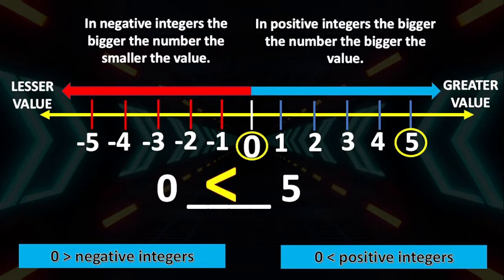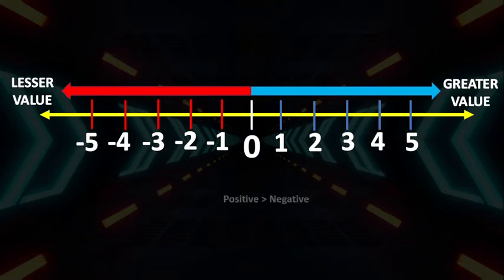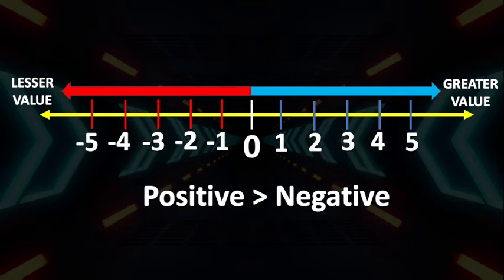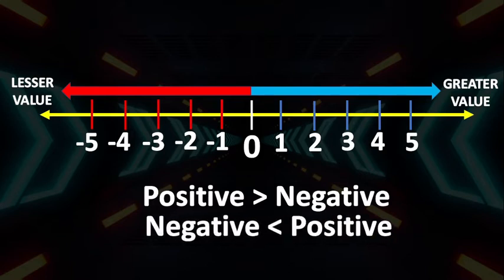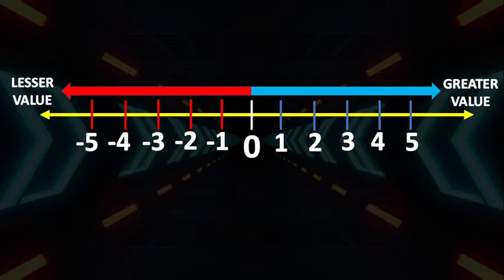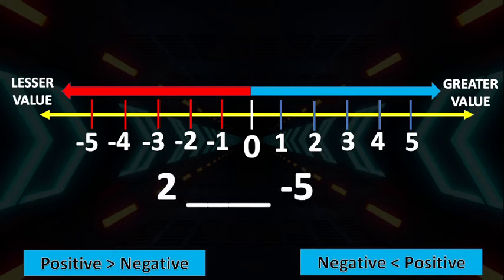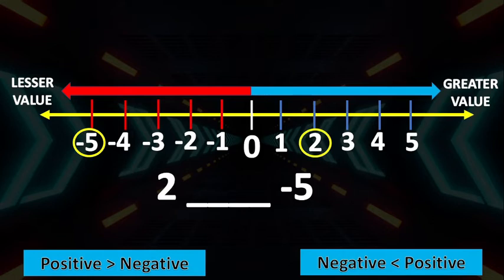We also need to understand that all positive integers are greater than all negative integers, or all positive integers and 0 are greater than all negative integers. It means that negative integers are less than 0 and positive integers. Let's try this one: compare positive 2 and negative 5. It seems that negative 5 is greater than positive 2, but since all positive numbers are greater than negative numbers, positive 2 is greater than negative 5.